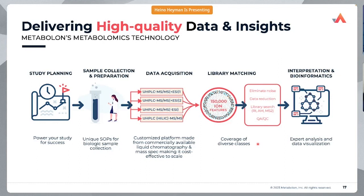Sample prep is done on our end — pre-processed samples are sent to us, and this is where we build a strong foundation for a successful project. The analysis is focused on precision and reproducibility across many different types of metabolites, chemical compounds, and classes. After that, it goes into our patent curation platform, where we follow several steps to eliminate noise, do data reduction, and match against our world-leading library of authentic standards run under the same conditions as the samples.